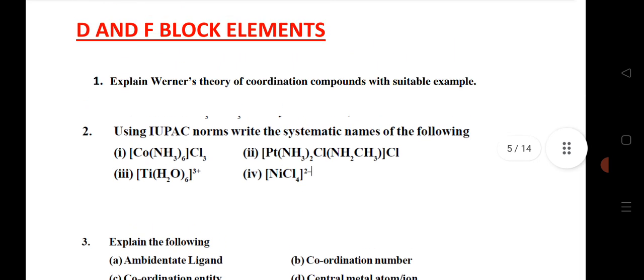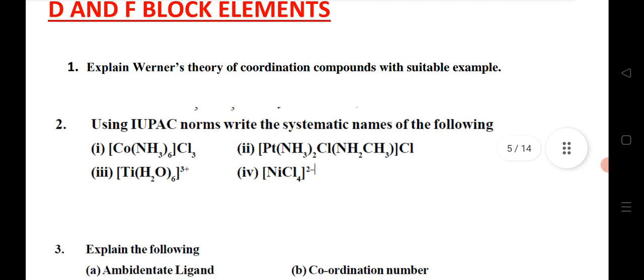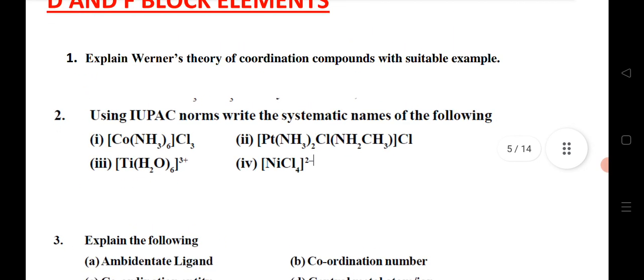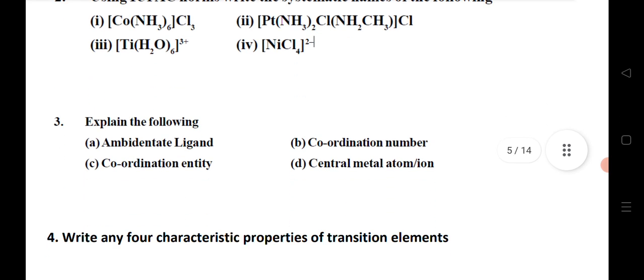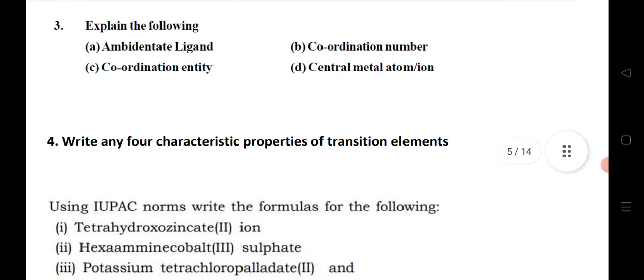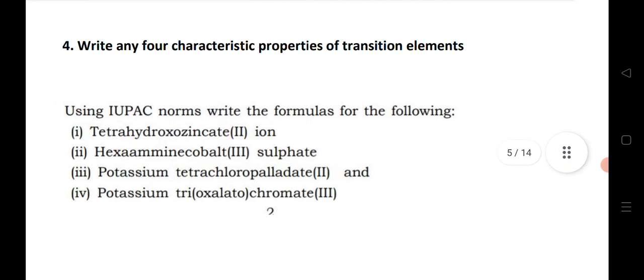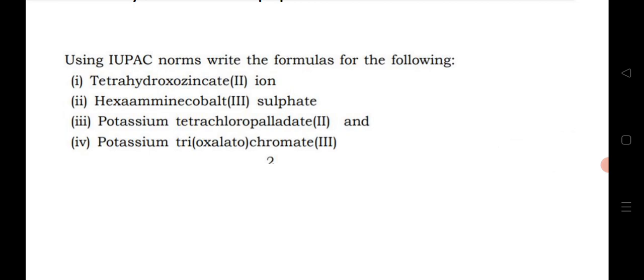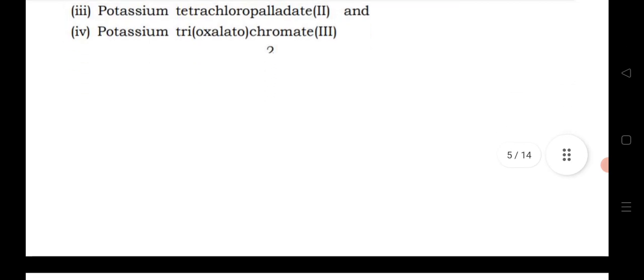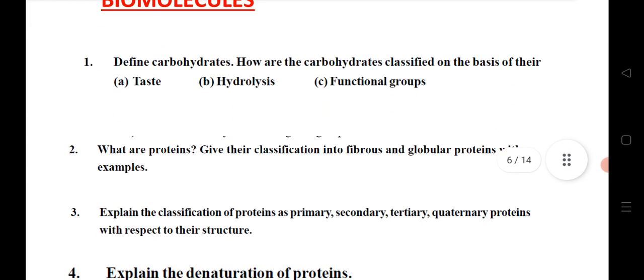So I have given here D and F block very important questions. Werner's theory, IUPAC name, explain the following ABCD, and write the four characteristics of transition elements. Next, fifth question is IUPAC name and write the formula for the following. Let us go to the next chapter, biomolecules.